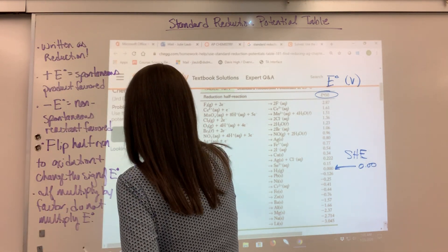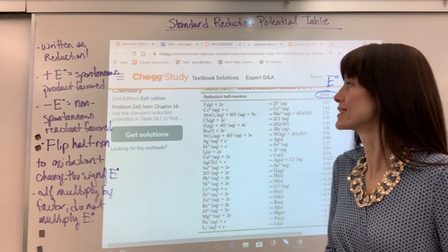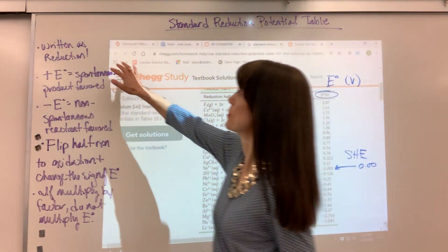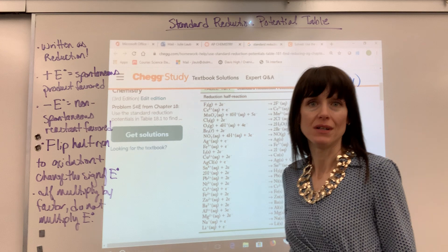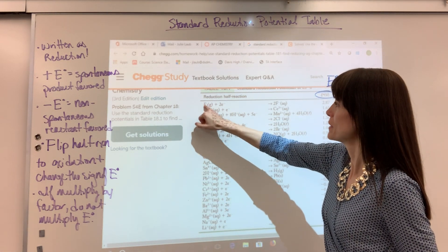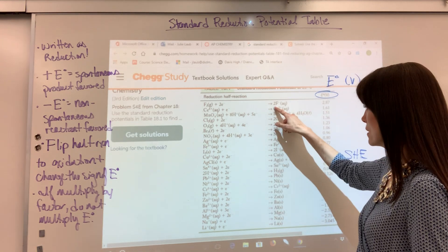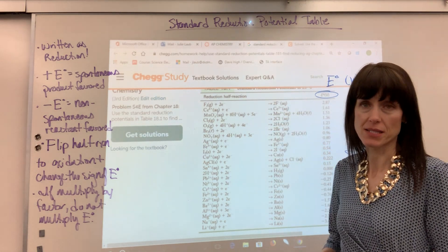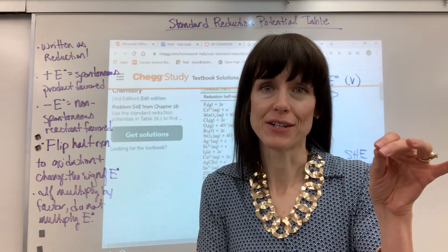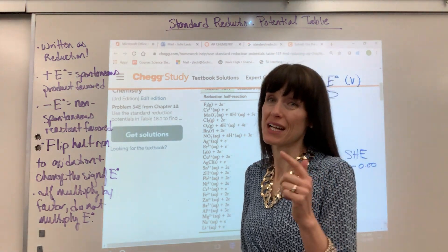Now, interpreting the numbers — this is super important. Every single one of these half reactions is written as reduction. So be careful, make a mental note: these are written as reduction. Notice it is going to be the species plus two electrons — we're adding electrons, gaining electrons — to yield, in this case, 2F⁻. Every single one of these is written as reduction, and that's embedded inside the name of the table: standard reduction potential table, not standard oxidation.